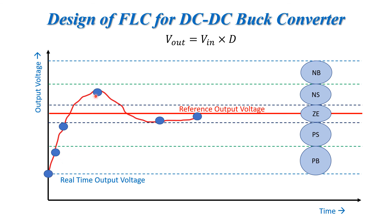If we look at this point, the error is negative small. From this property, we know that if V_out is more than required, we have to decrease V_out. So in order to decrease V_out, we must decrease the duty cycle.